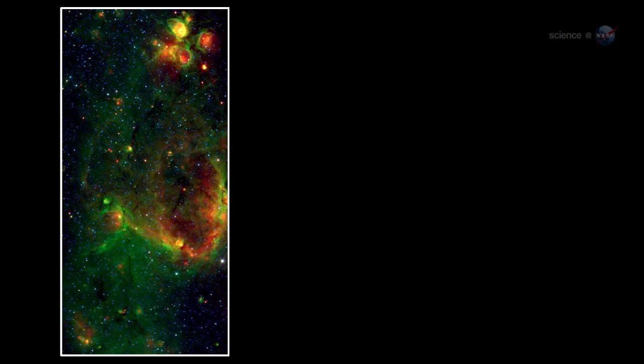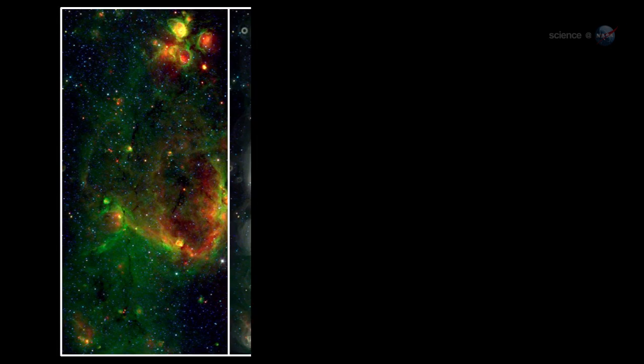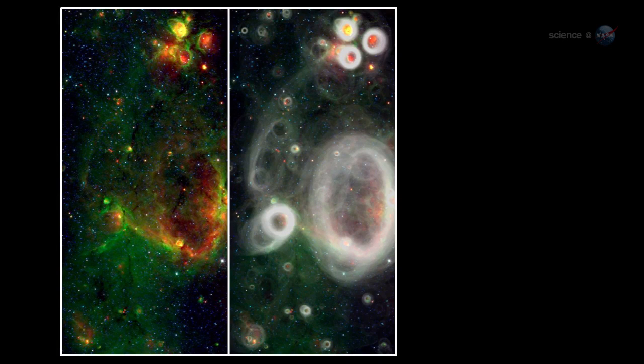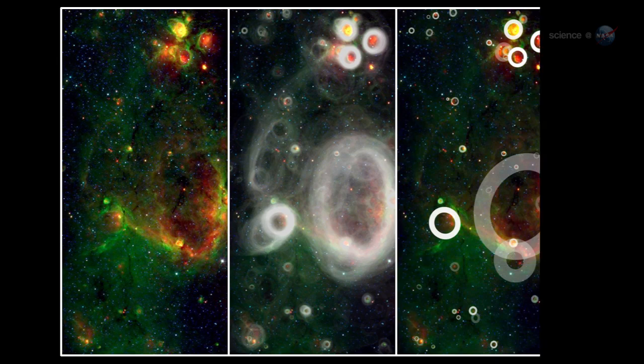Interstellar bubbles are a sign of star formation. Fast-moving winds from young, hot stars blow bubbles into the surrounding gas and dust from which they are formed. Because stars are born in groups, the bubbles tend to crowd together, overlapping in ways that can trick computers.